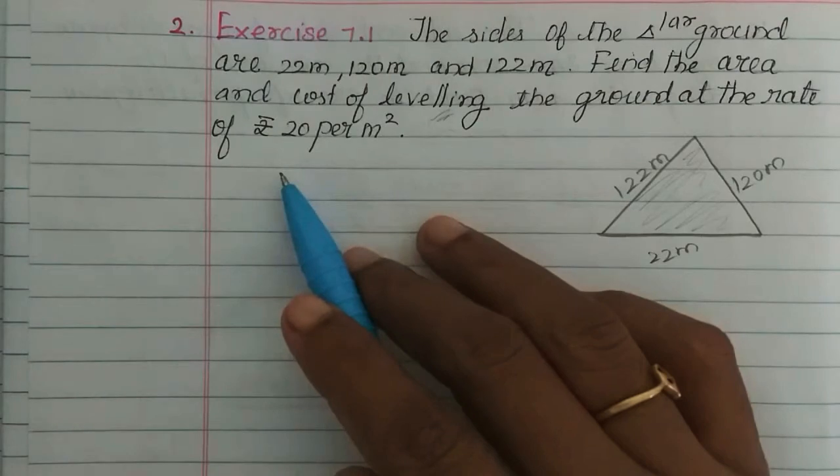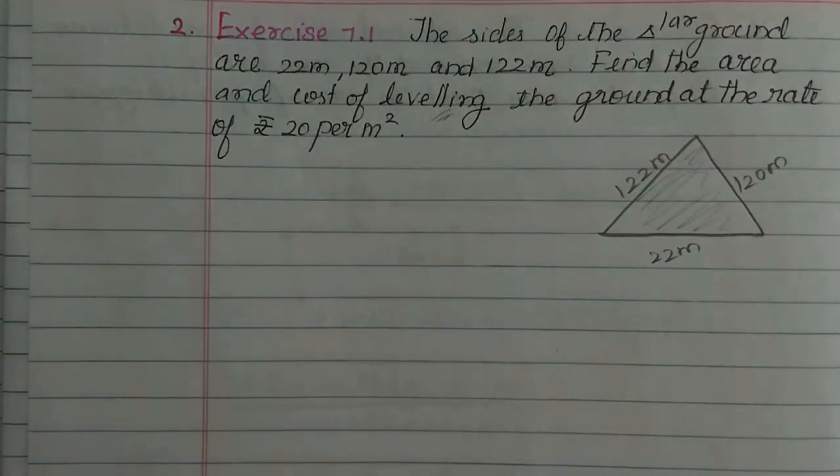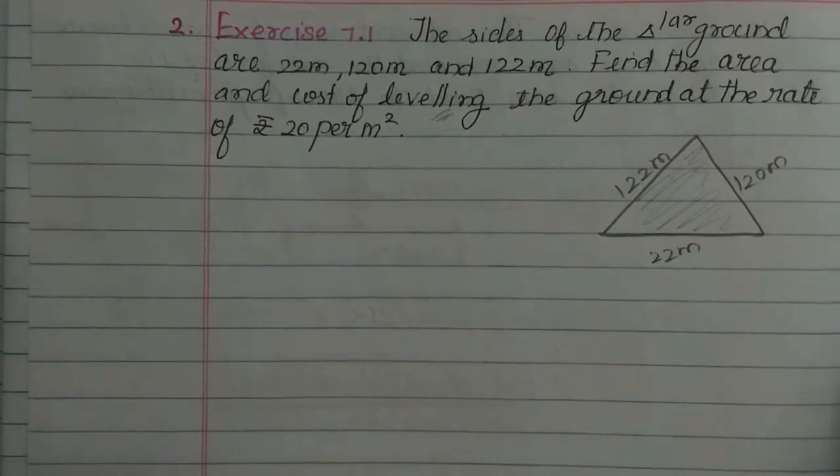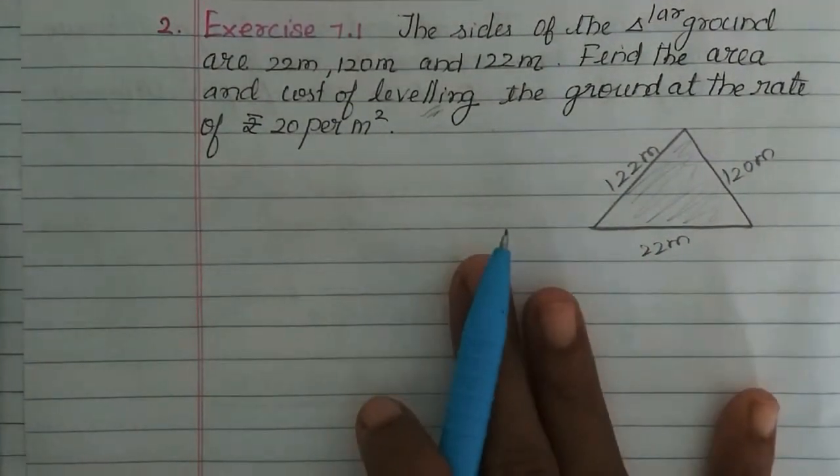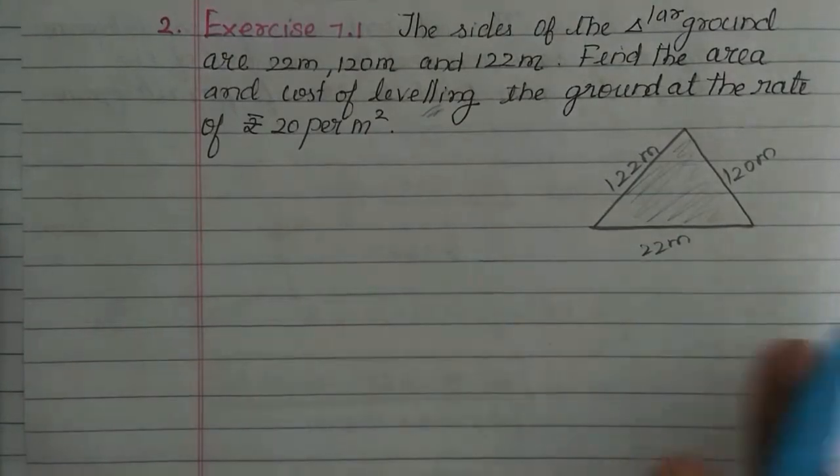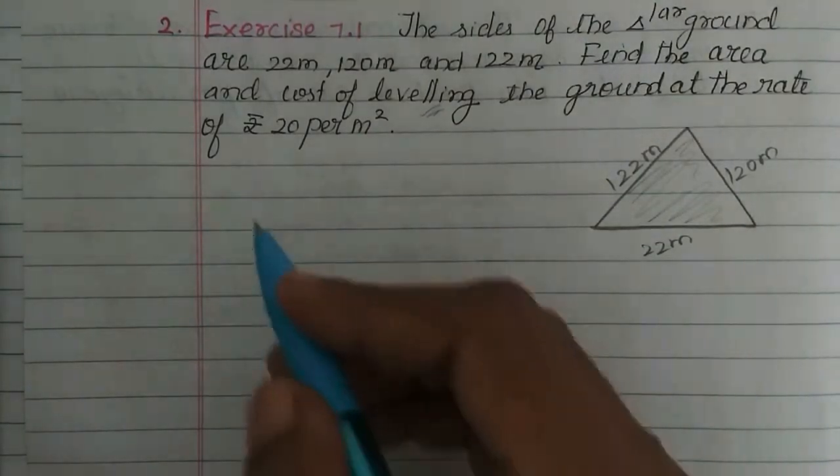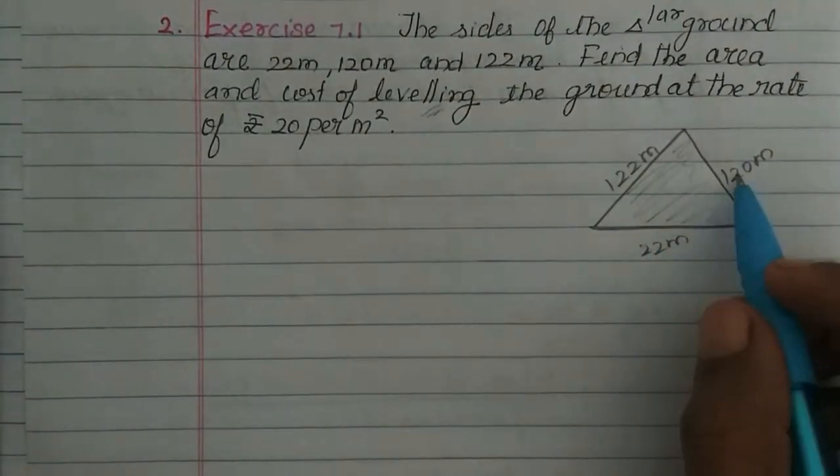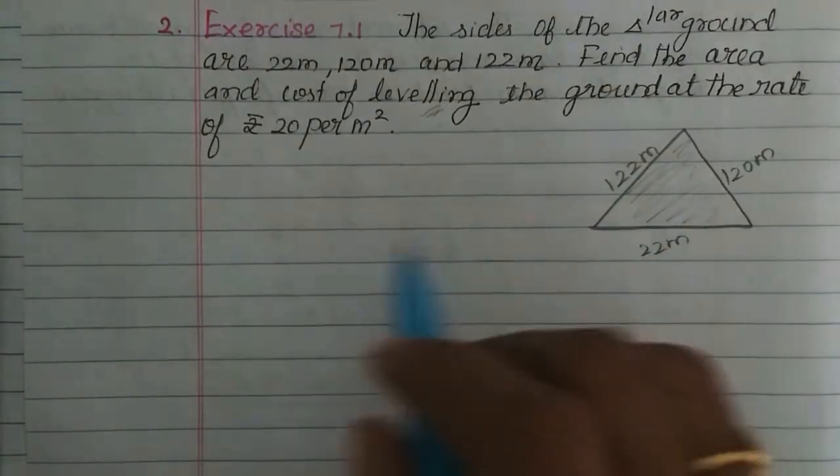If 1 meter square costs Rs. 20, then total area multiplied by 20 gives the cost of leveling. Now if you look at the numbers, the sides are 22m, 120m and 122m.